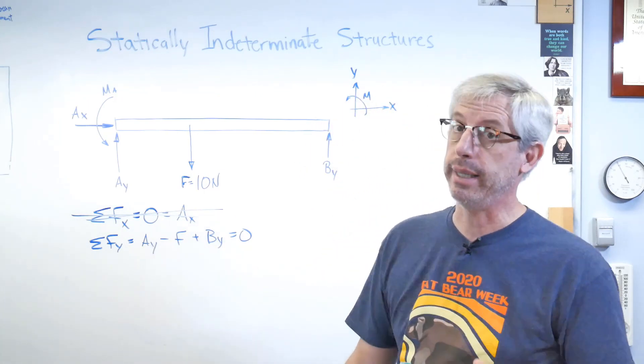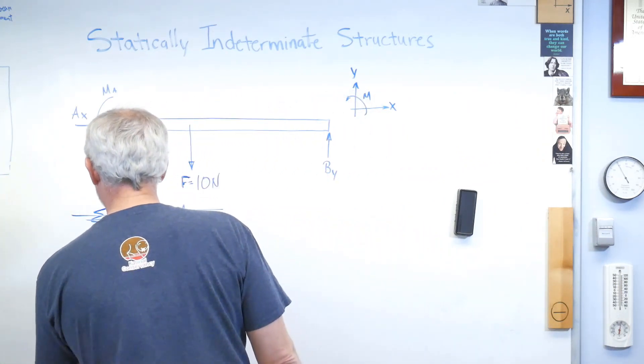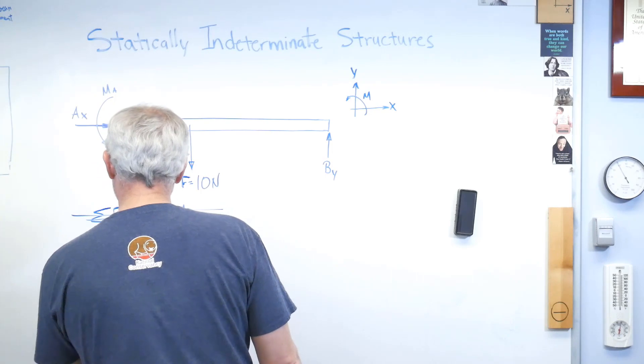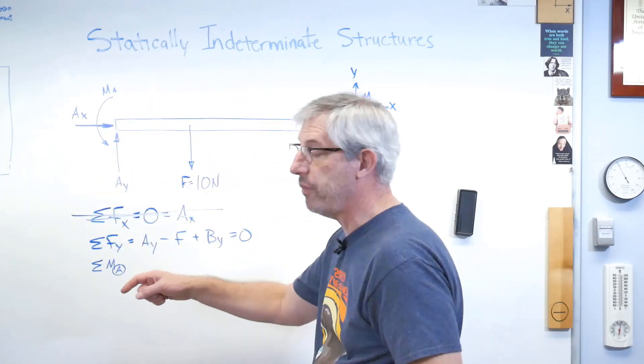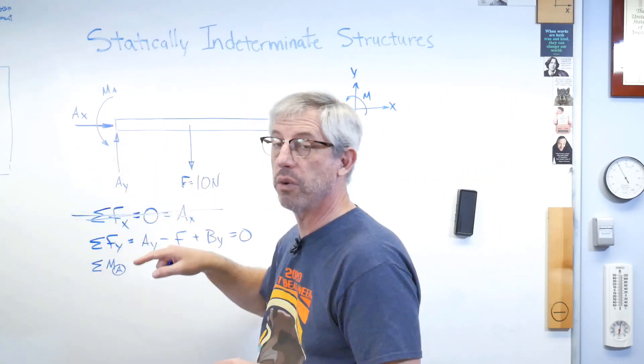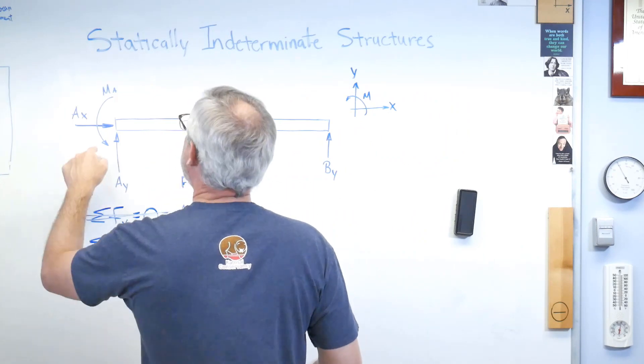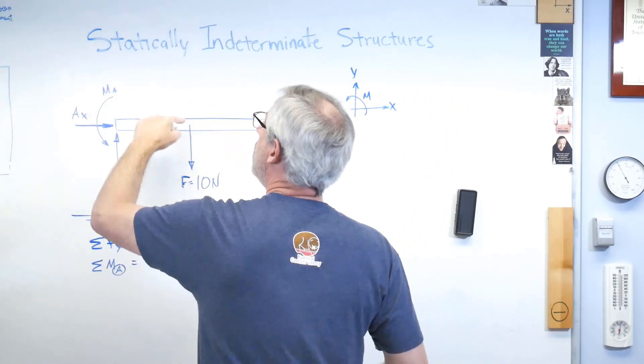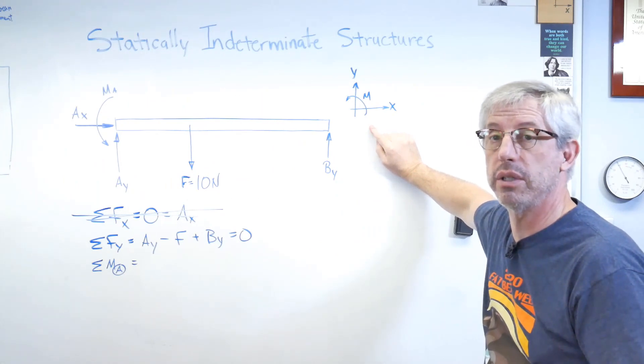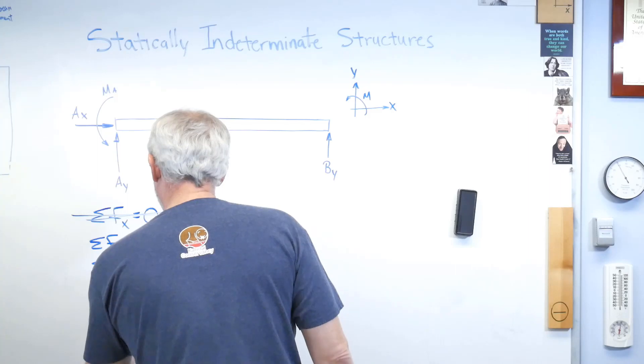I need another equation. Okay, fine. Let's sum the moments about somewhere, and let's sum the moments around point A. There's a couple forces there, and if I sum the moments about point A, the perpendicular distance from those forces to point A is zero, so they drop out. So let's just add some stuff up here.